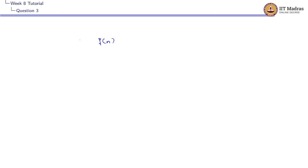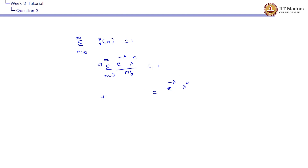The second condition is that the sum from n = 0 to infinity of f(n) should equal 1. Expanding this sum: e^(-λ) · λ^0 / 0! + e^(-λ) · λ^1 / 1! + e^(-λ) · λ^2 / 2! + e^(-λ) · λ^3 / 3! + and so on to infinity.